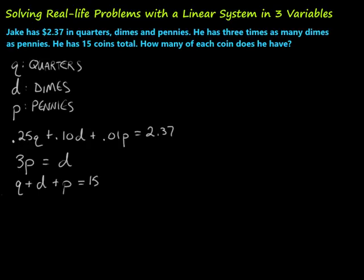Let's go ahead and do that. First thing we're going to do is we're going to take the 3P, we're going to put it into this equation for D, because then I'll just have Q and P there. So this becomes 0.25 times Q plus 0.10 times D, but we know D is the same as 3P, then we have 0.01 times P equals 2.37.